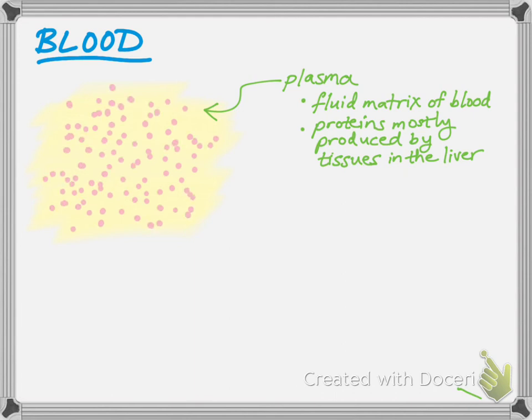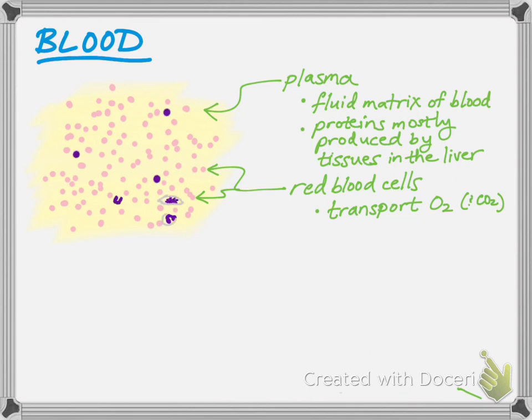Most of the cells that are found in the blood are going to be red blood cells, technically called erythrocytes, which means red cell in Greek, and their job is to transport oxygen and also CO2 to a lesser extent.